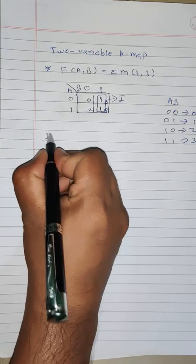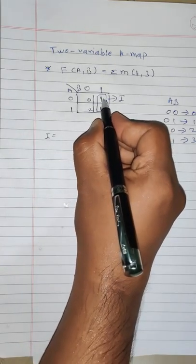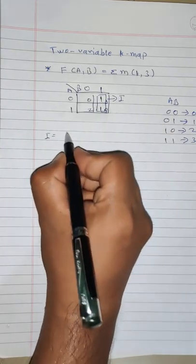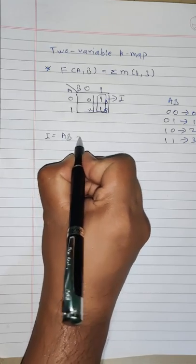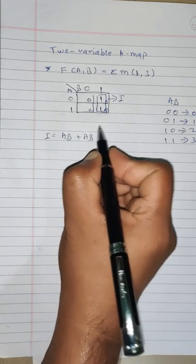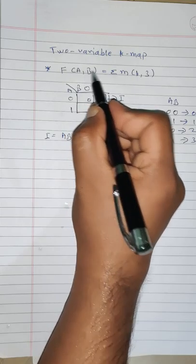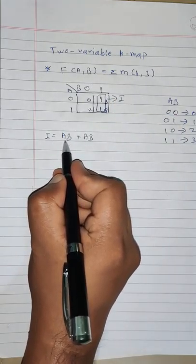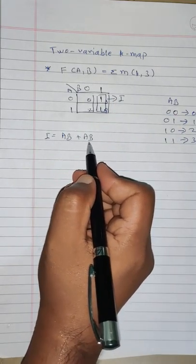Now let's solve the equation for group 1. How many ones are there? Two. That's why we will write ab plus ab. Why are we writing ab? Because it is a two-variable K-map problem, so we write two variables: ab and ab.